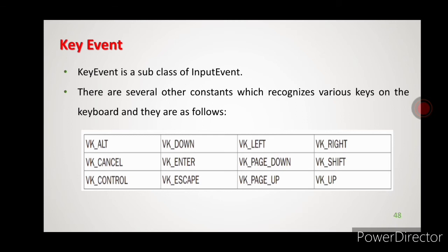As I mentioned, these are called modifier keys, and each key is represented by one constant. VK stands for virtual key. VK_ALT represents the Alt key, VK_CANCEL represents the Cancel button, VK_CONTROL is the Control button, and there are constants for Down, Left, Page Down, Page Up — all these keys on the keyboard are represented by these constants. When we press these keys on the keyboard, the key event is generated.